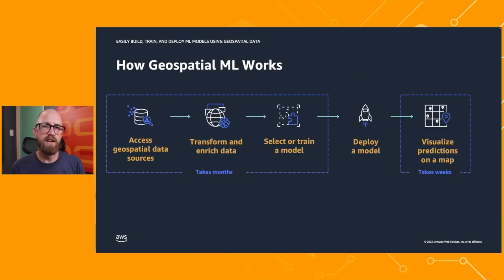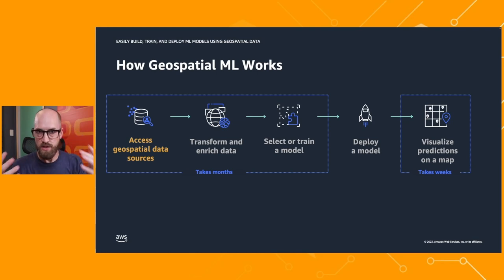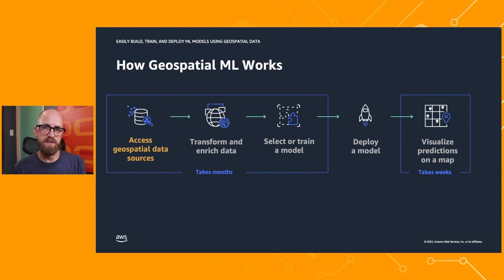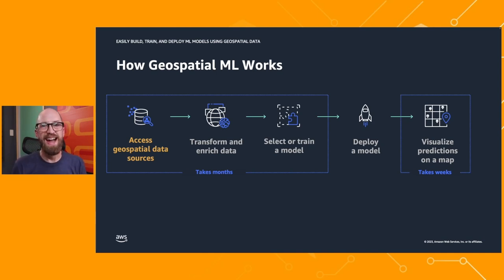Here I've got a timeline of a geospatial machine learning project. We start off with getting access to geospatial data sources — they may be data sources you already have, such as customer lists with addresses, but they could also be raster information like imagery of the planet's surface for land use analysis. These datasets are usually enormous, so negotiating to get them, even if they're open source, and then working through all the technical details to get that into your machine learning pipeline is expensive, complex, and takes time.